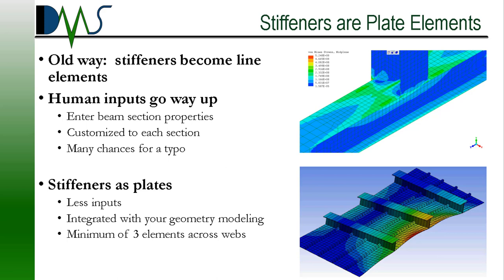Save yourself the time and the risk — use plate elements whenever you can. One caveat: the convenience of plate elements also requires the wisdom to apply mesh settings correctly. Those mesh sizes need to capture the stress variation across the web of the stiffener. Assuming minimal torsion, variation across the flange should be fairly minimal. Most guides recommend a minimum of three elements across the stiffener web. In the two pictures shown, the top picture uses plate elements with fine discretization across the web and flanges, while the bottom stiffener has just one element across the entire flange and web — a classic sign of line element modeling.